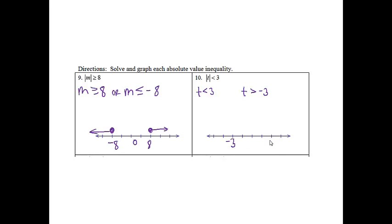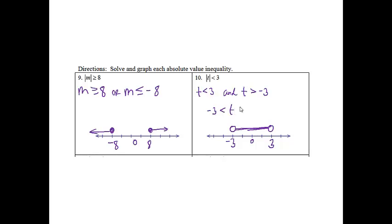Negative 3 goes on one side, 3 goes on the other, 0 in the middle. t is less than 3 is an open circle at 3 pointing to the left. t is greater than negative 3 is an open circle at negative 3 pointing to the right. So this makes a connected graph, so we will put the word "and" in there. This is acceptable, or you can rewrite it as negative 3 is less than t, which is less than 3.